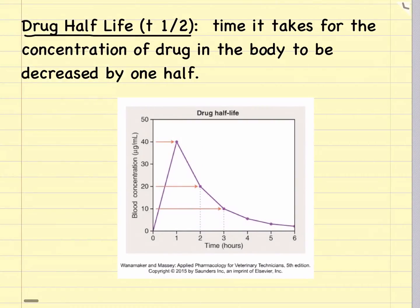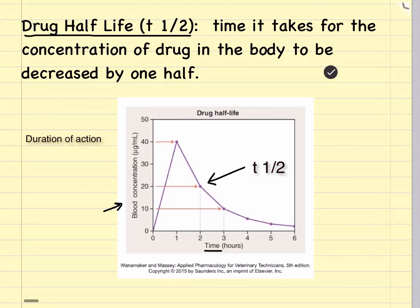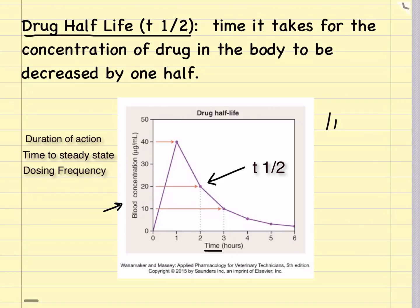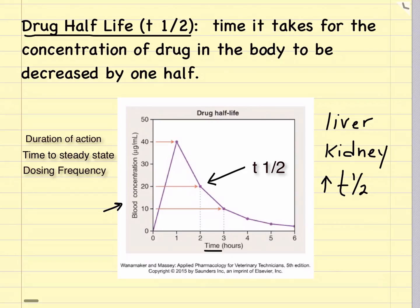Every drug has a half-life, or t½, which is the time it takes for the concentration of a drug in the body to decrease by one half once it reaches peak. A drug's half-life determines the duration of action after a single dose, the time required to reach steady state, and the dosing frequency. Things that can increase a drug's half-life include liver disease, where the drug isn't metabolized properly, or kidney disease, where the drug isn't excreted at a normal rate.